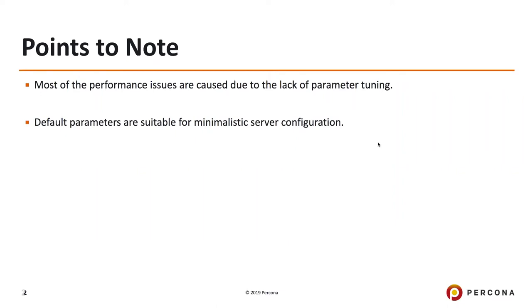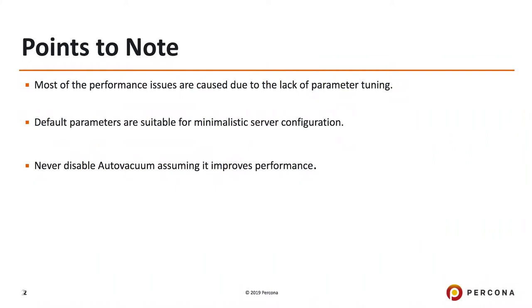For example, your shared_buffers — the Postgres memory area — is actually set to 128 megabytes by default. That could be really tiny for a huge production database. I also see a lot of mistakes related to autovacuum. People assume that disabling autovacuum improves performance, but you may be making a really big mistake there. If you go ahead and disable autovacuum, you need to know what autovacuum is doing in the backend, and you should be able to do all of that yourself — but it's really, really difficult to tweak everything that autovacuum does.